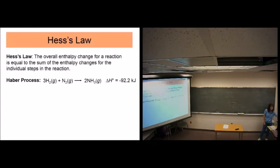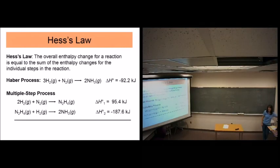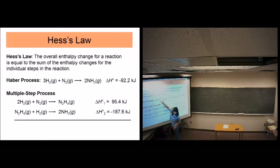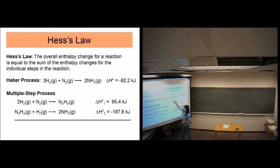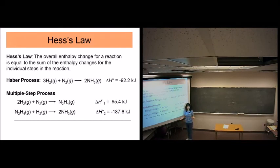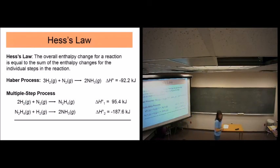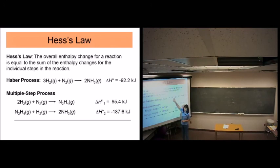Hess's Law says the enthalpy of a reaction equals the sum of the enthalpy changes for all the individual steps. So if B plus C together give the same net equation as A, I just add their enthalpies. I need to make sure those individual steps add together to give me the correct reactants and products. If they match, I just add the enthalpies — and that's Hess's Law. We'll practice that on Wednesday.